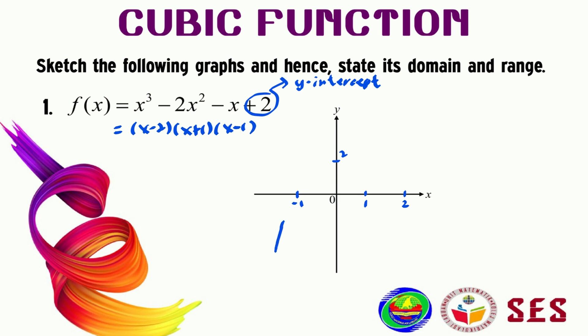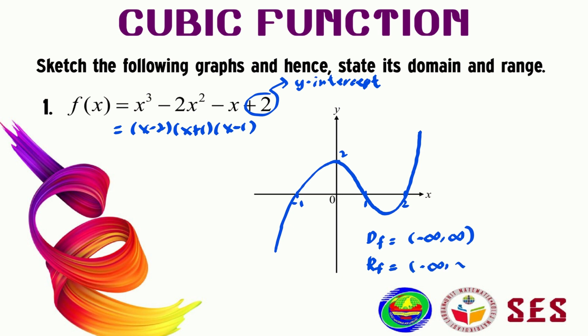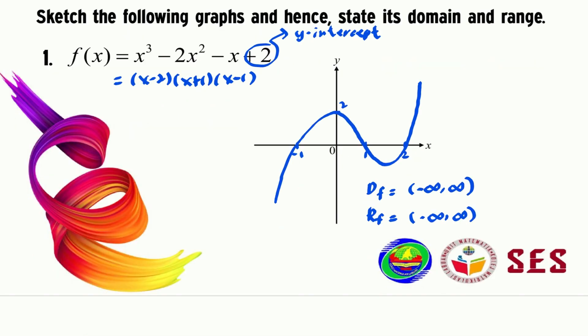Let us sketch the graph, making sure it passes through all of the intercepts we obtained. The domain of f is negative infinity to positive infinity, and the range of f — looking at the interval of y — is also negative infinity to positive infinity. Let us proceed to question number two.